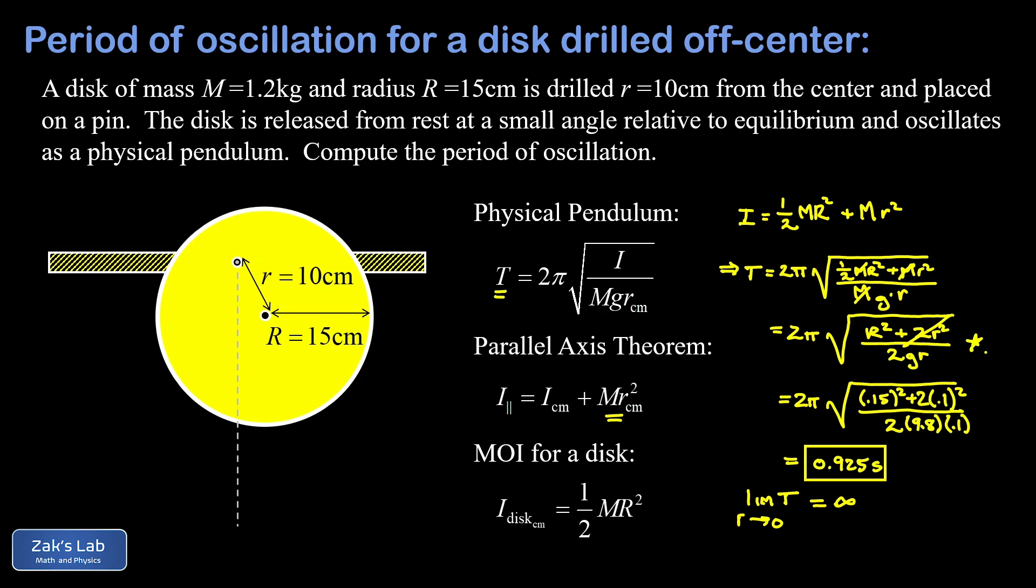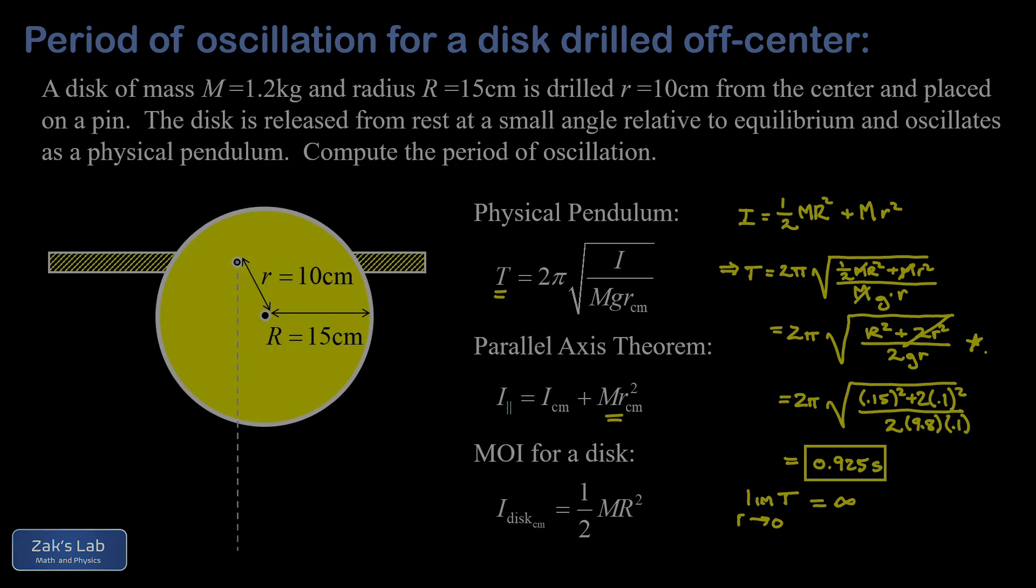If you happen to be a physics teacher, I highly encourage you to incorporate a lab on this in your course. It's very simple to find materials to do this in the classroom. For me, I happen to find metal discs available at my local metal shop, and then I just drilled them off-center. I use high-speed steel pins that I got off Amazon and just put those in a clamp, and we have a handy physical pendulum. But it could be as simple as just picking up a wood disc at a hardware store and drilling a big enough hole in it to fit a pencil through it, and you can still get good data to compare against the theoretical calculations here.